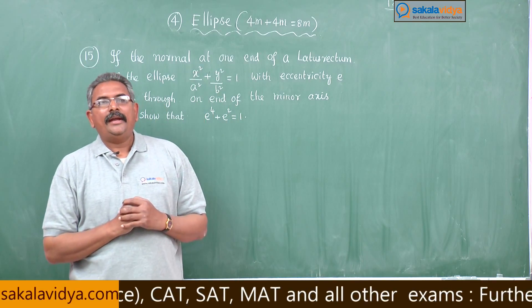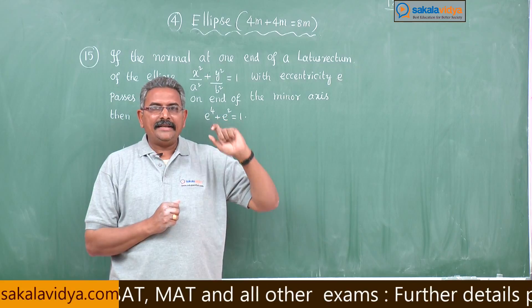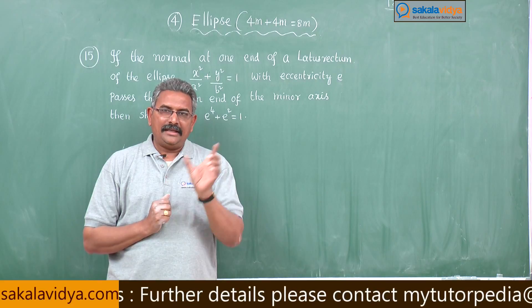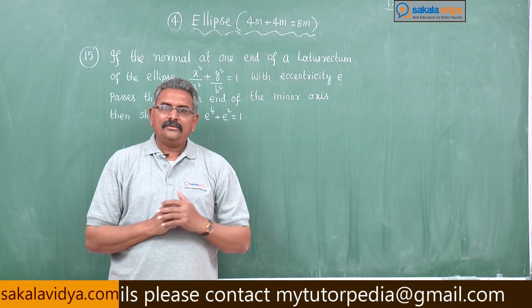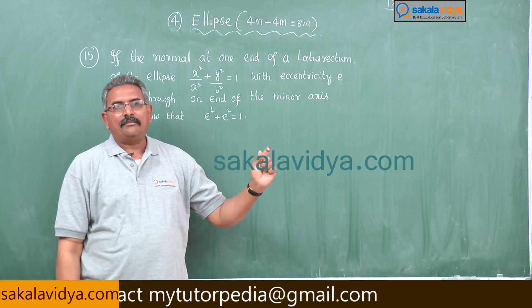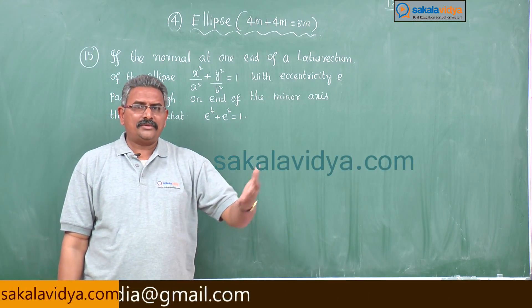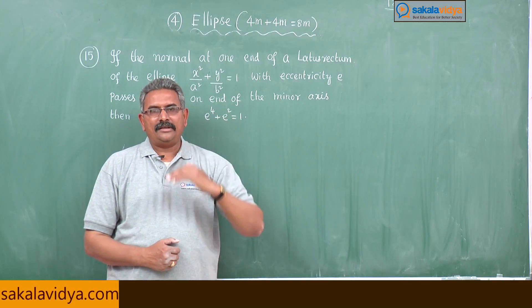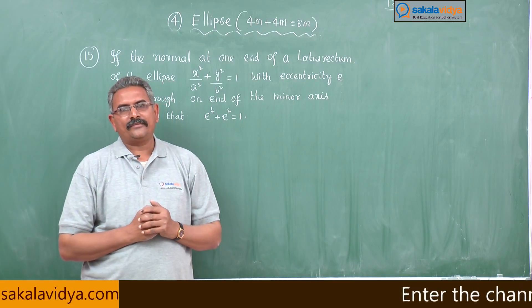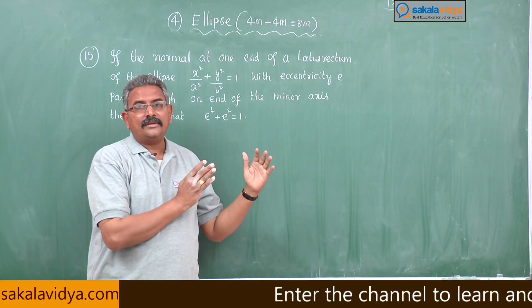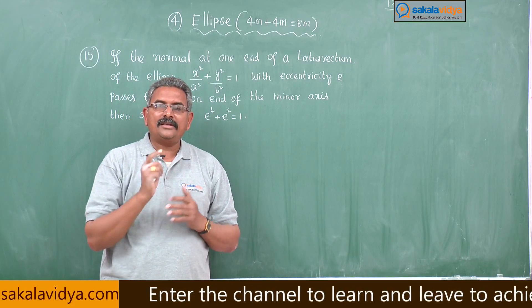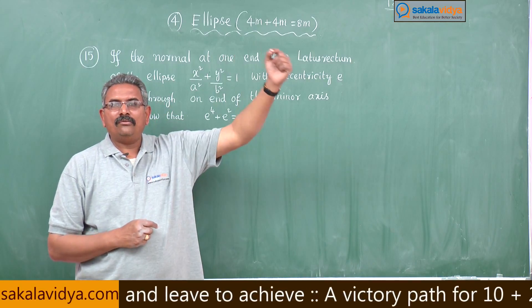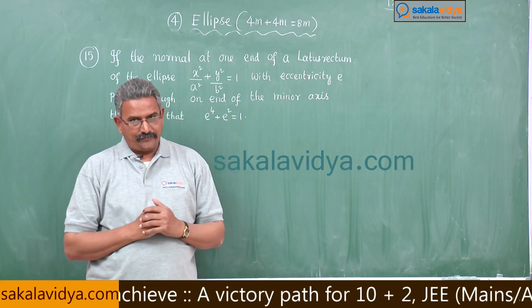First, one of the ends of the latus rectum is (ae, b²/a). The equation of the normal at point (x₁, y₁) to the ellipse is a²x/x₁ minus b²y/y₁ = a² minus b². Now substitute x₁ = ae and y₁ = b²/a to find the equation of the normal at one end of the latus rectum.